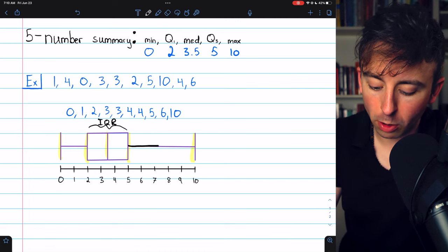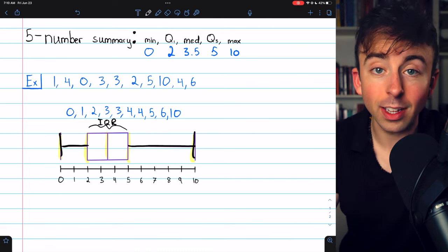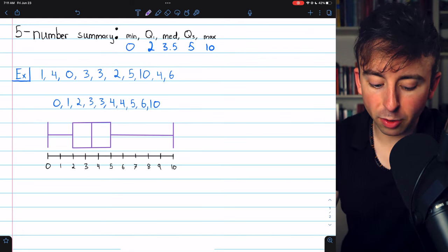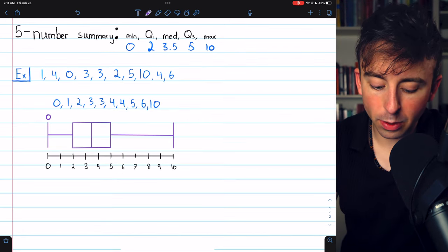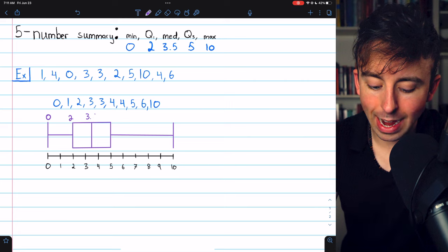And then we draw what are called whiskers going out to the maximum and the minimum. And that's how you make a box plot. We can also label the values specifically if we need to be extra clear.